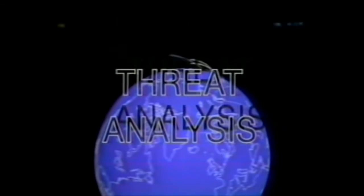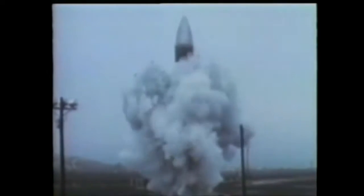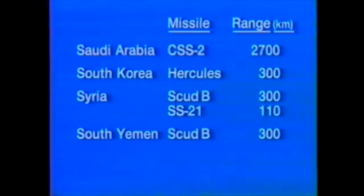The likelihood of a massive first strike from the Soviet Union is less today than in the past, but that does not eliminate the threat to American troops and interests in the world. Today, the greatest risk may come from the third world. There are eight countries with missiles right now, and most have or are developing nuclear weapons: Afghanistan, Iran, Iraq, Israel, Saudi Arabia, South Korea, Syria, and South Yemen have missiles in service with ranges up to 2,700 kilometers.